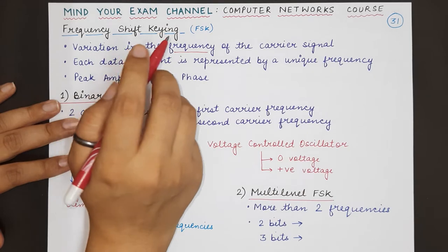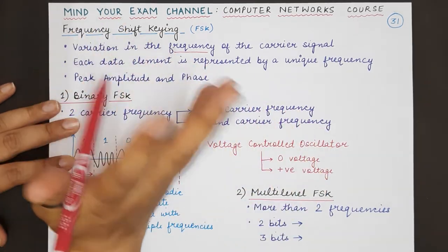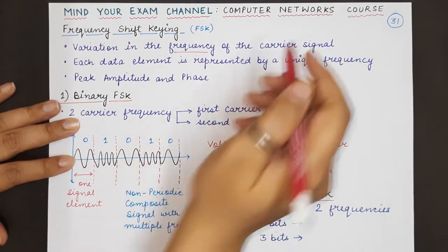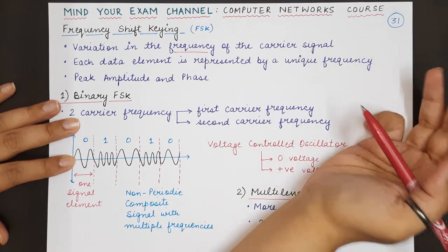In each technique for performing digital to analog conversion, we are changing one of the three important characteristics of a carrier signal: either the amplitude, frequency, or the phase.